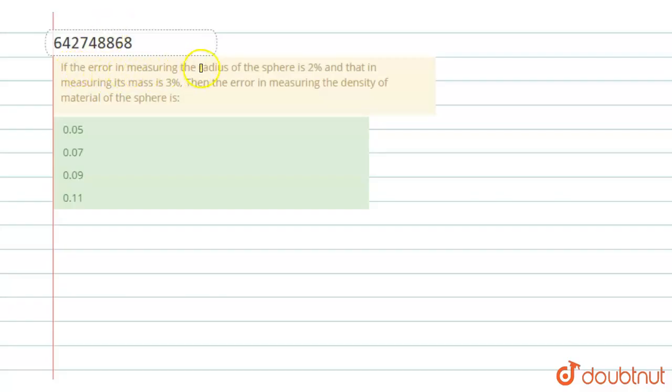If the error in measuring the radius of a sphere is 2 percent and that in measuring its mass is 3 percent, then the error in measuring the density of material of a sphere is: 0.05, 0.07, 0.09, or 0.11?